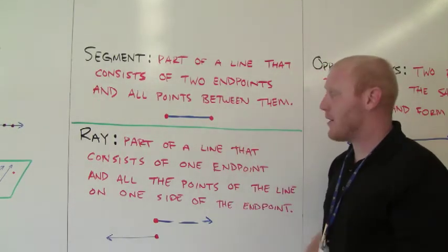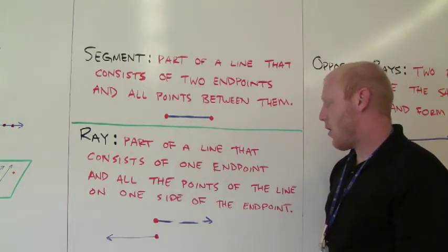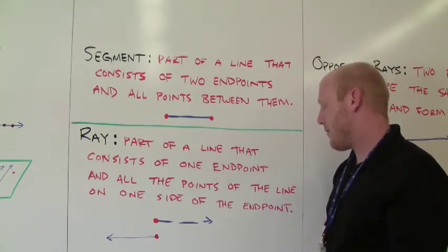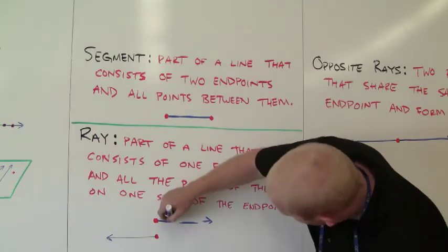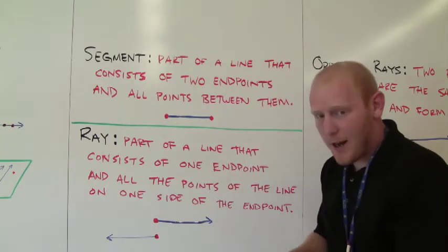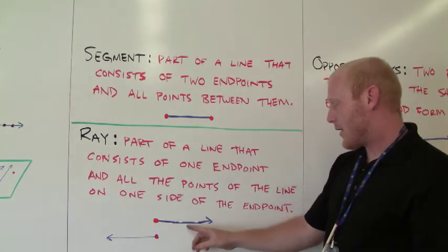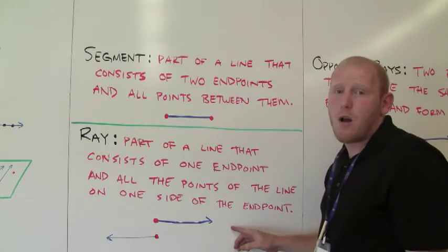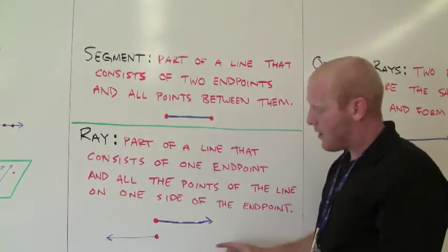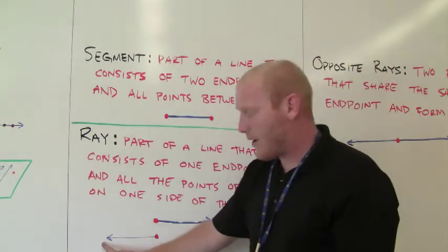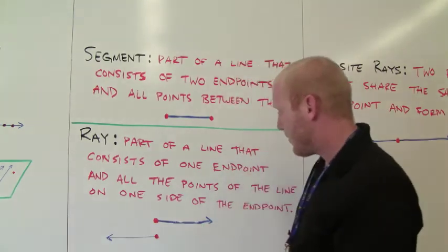Our next definition is ray. What's a ray? It's part of a line that consists of one endpoint and all the points of the line on one side of the endpoint. To visually show what a ray is — you see here we have an endpoint and then part of a line in the direction that goes forever. So conceptually, you kind of think of it as half of a line. It starts with an endpoint and then goes forever in one direction. Going the opposite way, there's another ray — it starts at an endpoint and goes forever in one direction, hence the arrows.